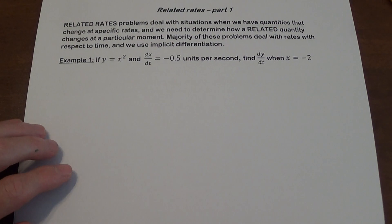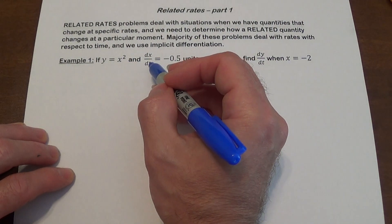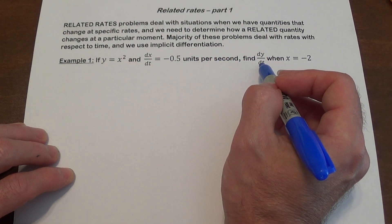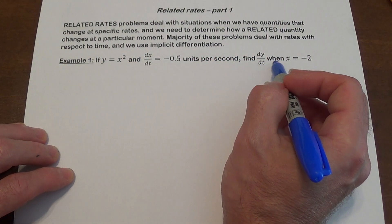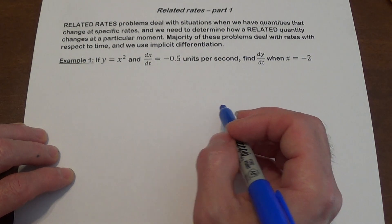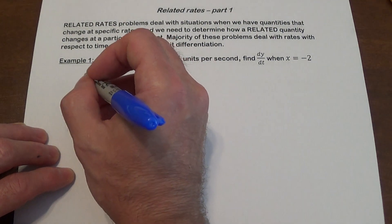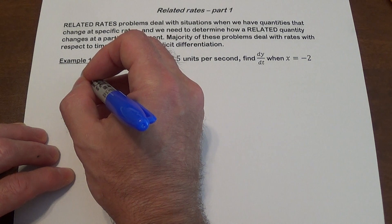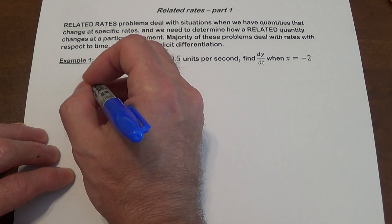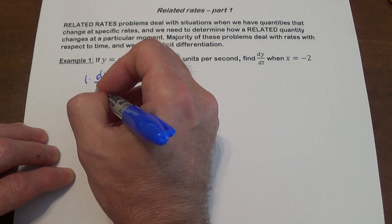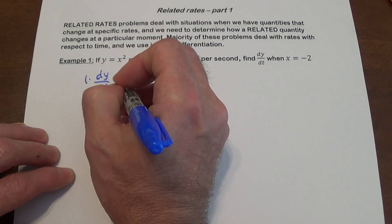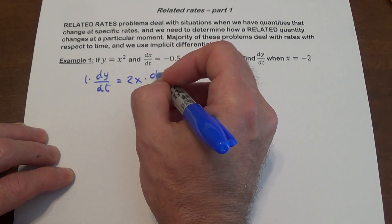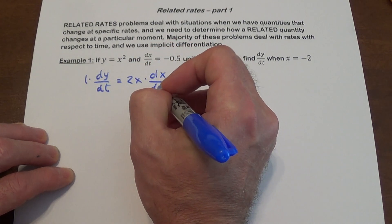Here's the first problem: y equals x squared. dx/dt is negative 0.5 units per second, and we want to find dy/dt when x is negative 2. We use implicit differentiation with respect to t. The derivative of y is dy/dt, and the derivative of x squared is 2x times dx/dt.